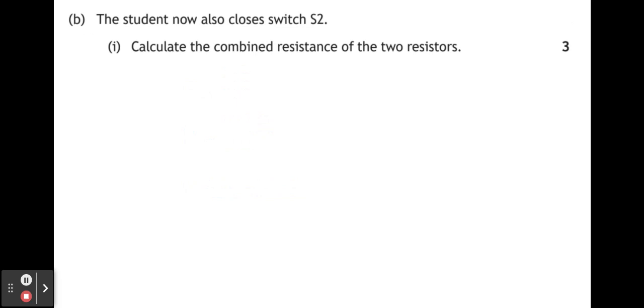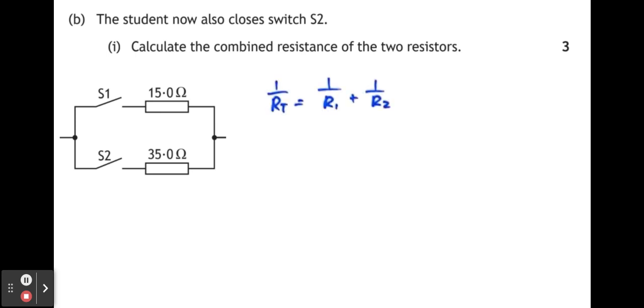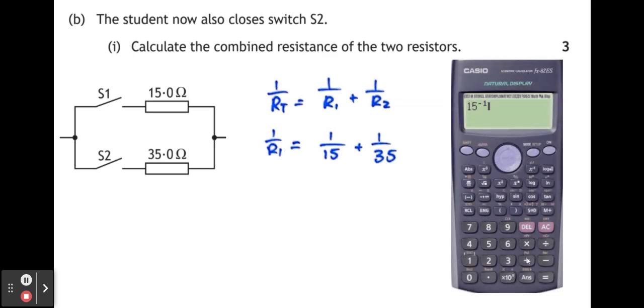Part B, the student now also closes switch S2. Calculate the combined resistance of the two resistors. When we've got the two resistors both functioning and both as part of the circuit, they are now in parallel with each other. To calculate the total parallel resistance, we use this formula: 1 over RT equals 1 over R1 plus 1 over R2. We input those numbers into our formula. When we do this on a calculator, we need to do 1 over 15 plus 1 over 35, which gives us a value of 2 over 21. We then need to un-1 over that, as it were, and get a final answer of 10.5 ohms.